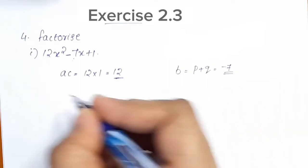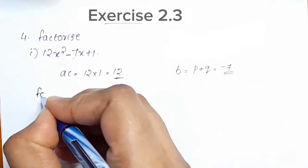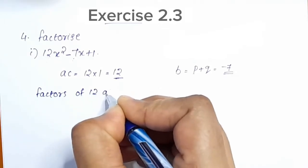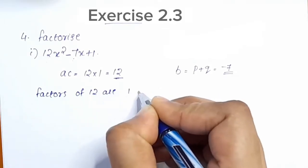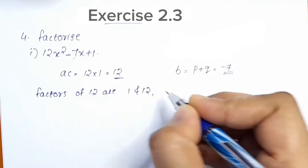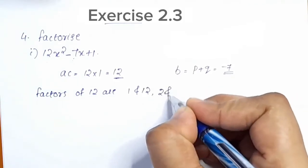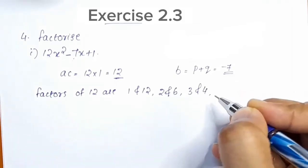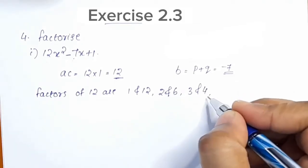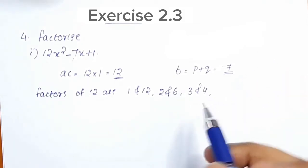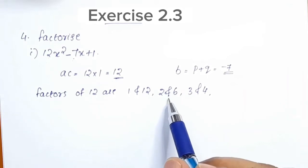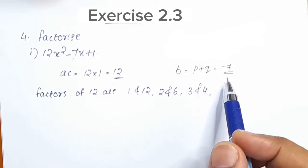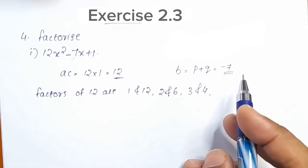The factors of 12 are: 1 and 12, 2 and 6, 3 and 4. Those are the factors of 12. Now we will use any factors that give us negative 7.